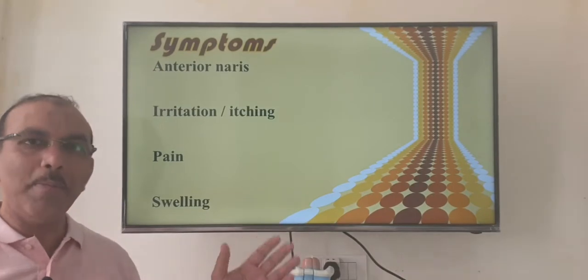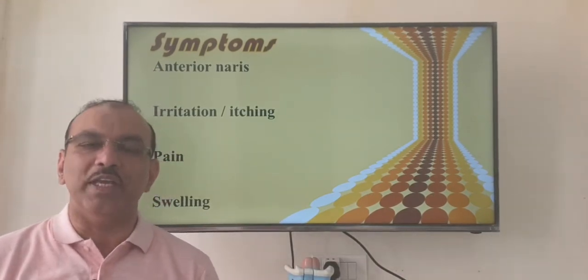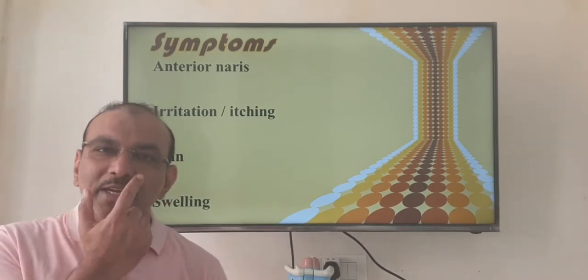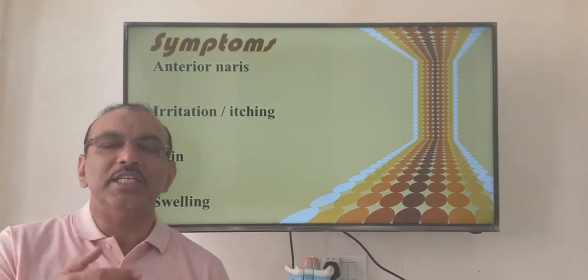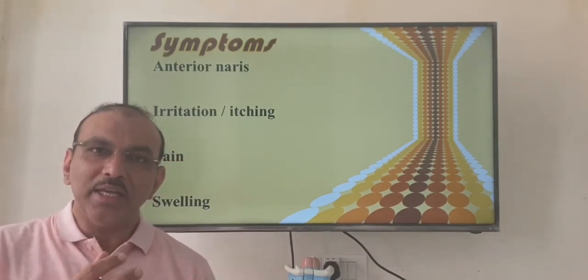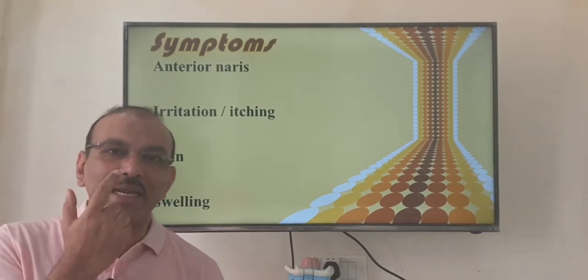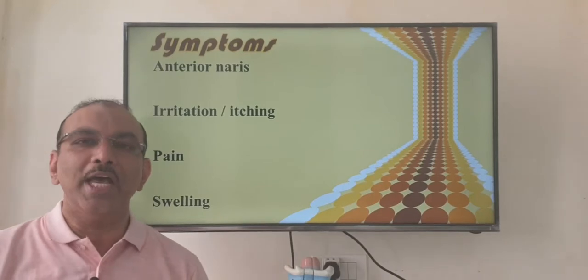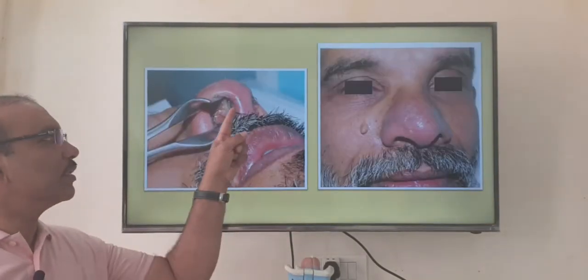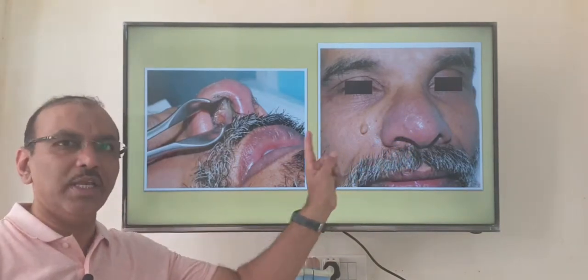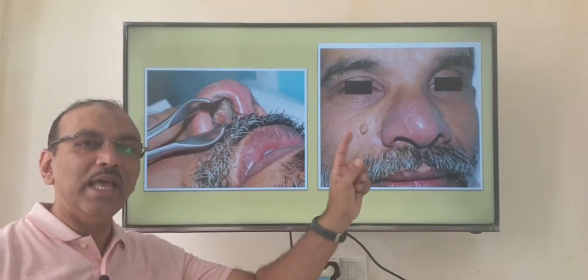In the acute stage, most patients present with irritation of the area initially. As the disease progresses, they develop pain, and the whole area becomes red or congested, spreading to the lower part of the external nose as well — as seen in this picture. The area is red and tender; the patient will not allow you to touch it.